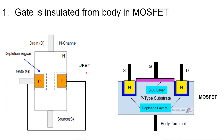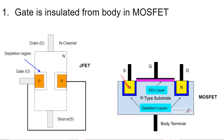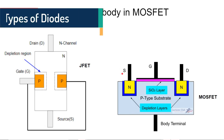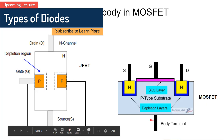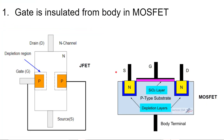Both of these devices have three terminals. The JFET has drain, gate, and source; similarly the MOSFET has drain, gate, and source. The body terminal of the MOSFET is usually connected to the source inside the device — it is not a very important terminal. These three terminals — drain, gate, source — are the important ones through which we control the working of the device.